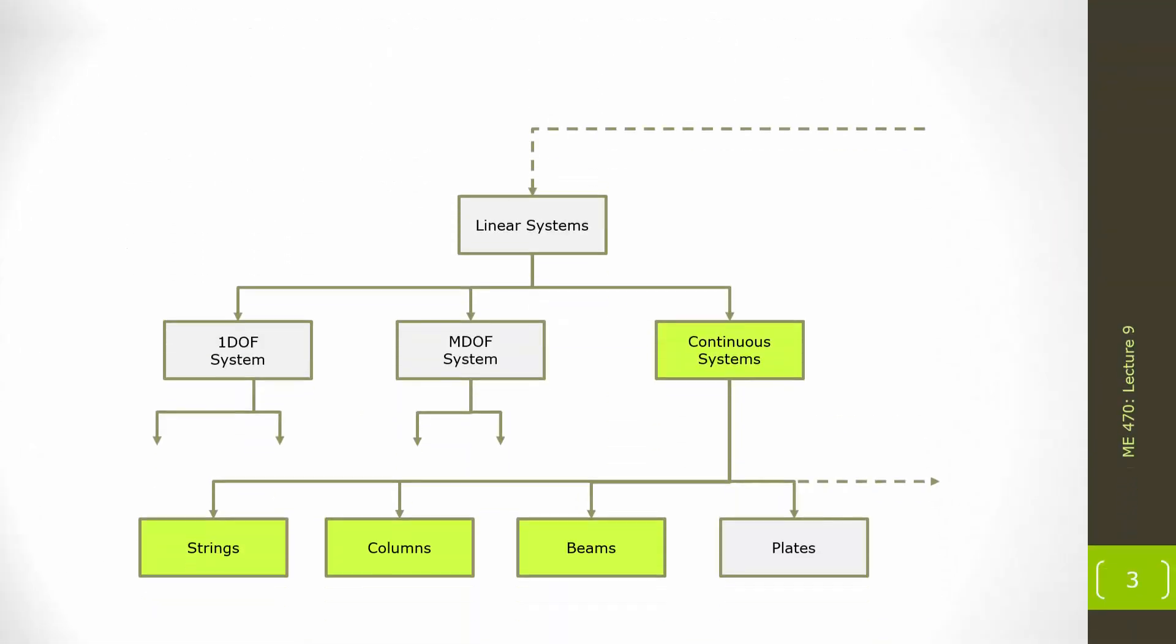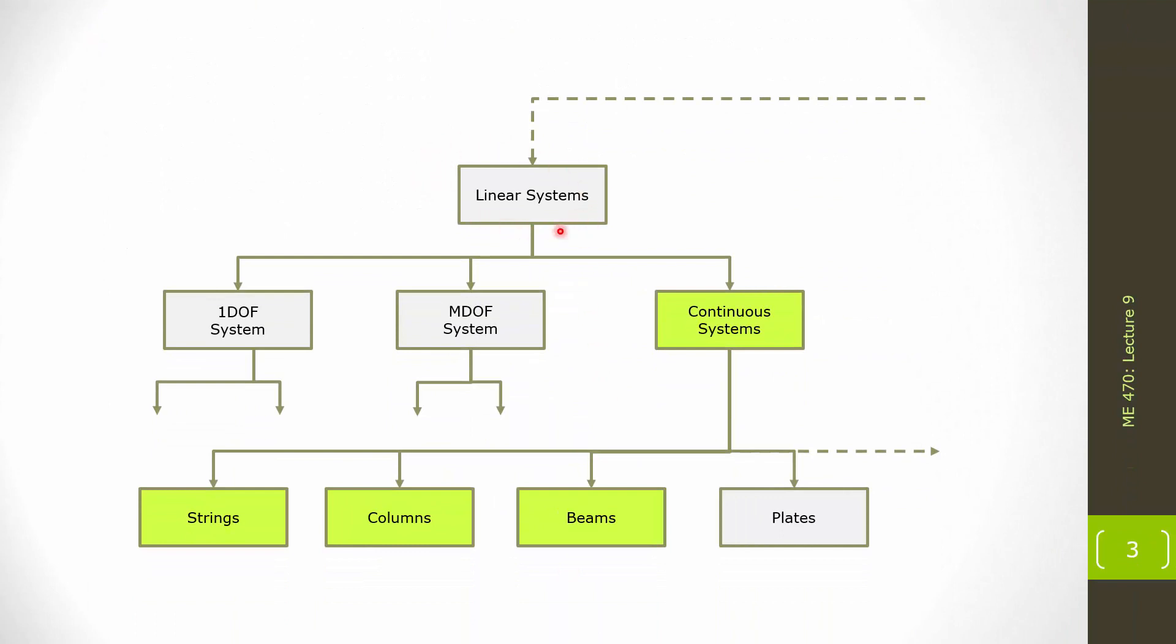In the grand scheme of this course, still under looking at linear systems, we began with one degree of freedom systems. We then complicated that by adding additional degrees of freedom and looked at multi-degree of freedom systems and saw that we were more limited in the types of problems, at least in this class, that we're able to solve. And now we're going to increase the complexity again into continuous systems, where we're going to have an infinite number of degrees of freedom. And in this course, we are going to be focusing on strings and columns in this section.